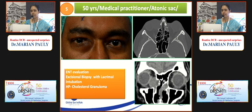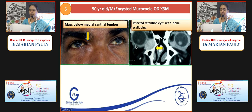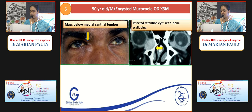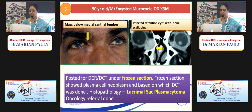A 50-year-old with encysted mucocele came for DCR with a firm mass below the medial canthal tendon. CT reported an infected retention cyst with bone scalloping. This did not look typical, so the patient was posted for DCR versus DCT depending on frozen section. Intraoperatively the wall was thick; frozen section revealed plasma cell neoplasm, based on which DCT was performed - histopathology confirmed lacrimal sac plasmacytoma. This was an intraoperative surprise, and the patient is doing well at 10-year follow-up.